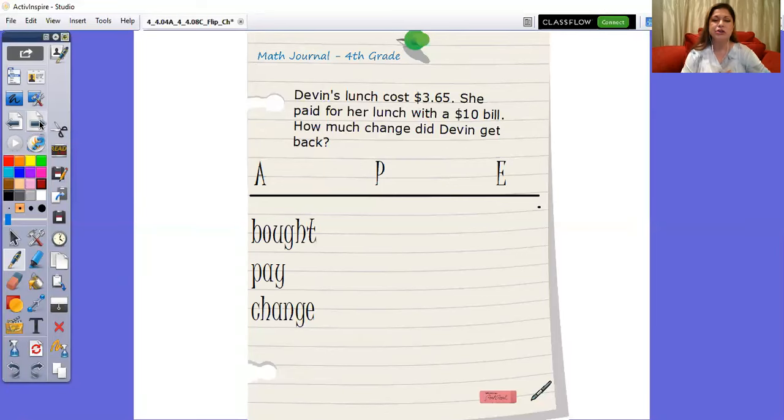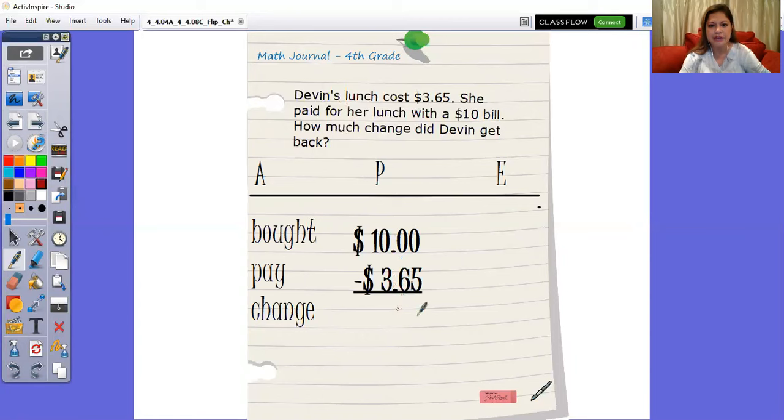When I plan it out, I plan out my subtraction like this. I want to stack it up. I want my dots to line up right here, and I want to make sure that my ten dollars has a decimal and a zero and a zero - $10.00.